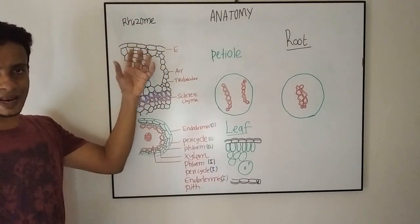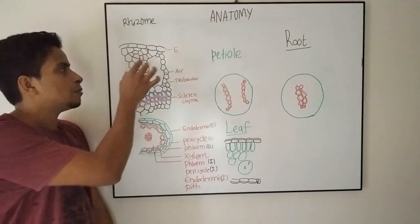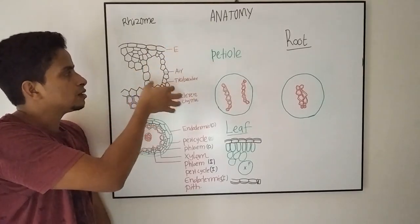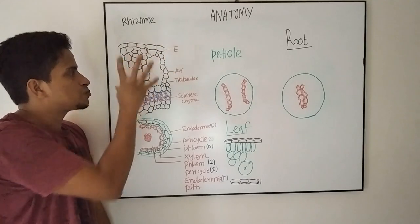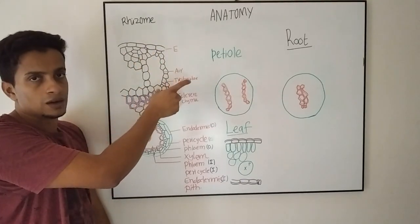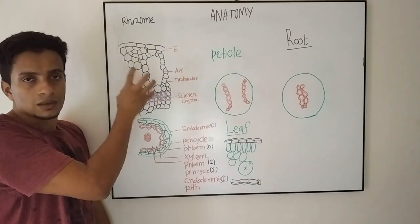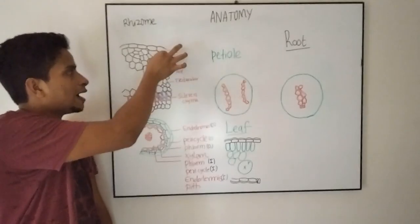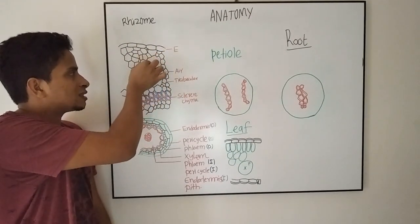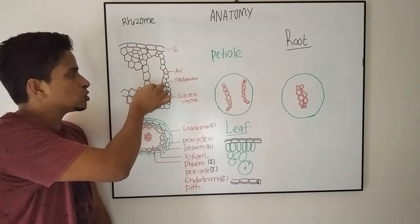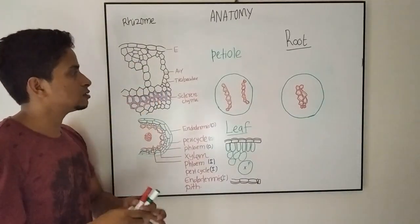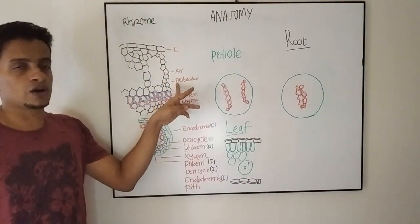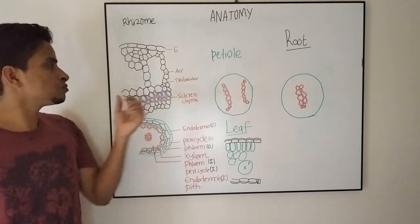Outer cortex is parenchymatous, composed of some spaces in between. This space is known as aerenchyma. The spaces are formed by the cells which are known as aerenchyma, and the chamber represents the air chamber. The structures which are responsible for this air chamber are known as trabeculae.